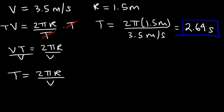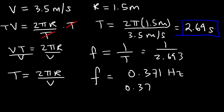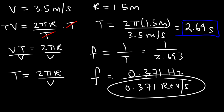Now that we have the period we can calculate the frequency. To make one revolution, it takes the ball 2.69 seconds. The frequency is 1 over the period, so it's 1 over 2.69, which gives a frequency of about 0.371 hertz — or equivalently 0.371 revolutions per second. So that's how you calculate the period and frequency if you know the speed and radius of the circle.